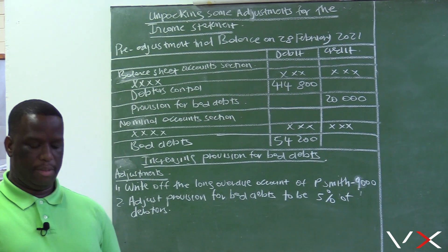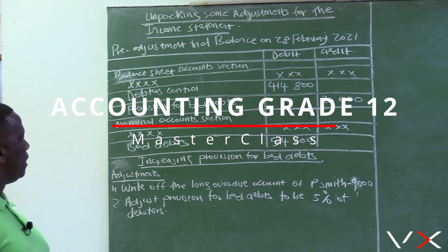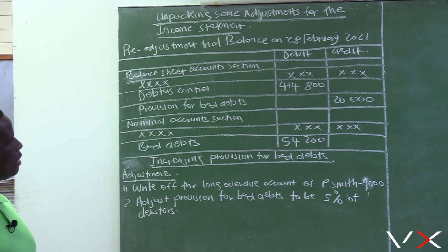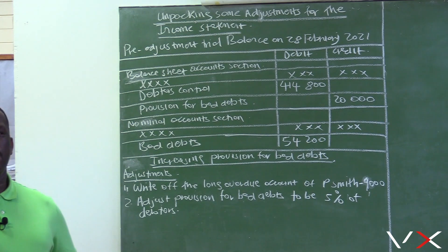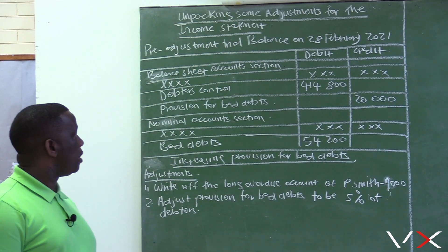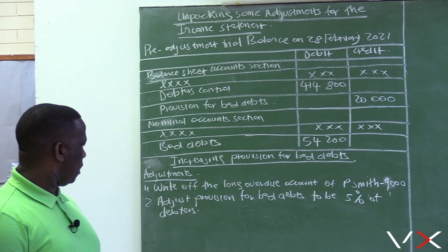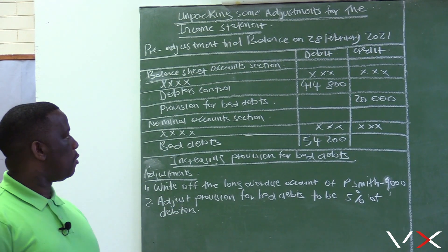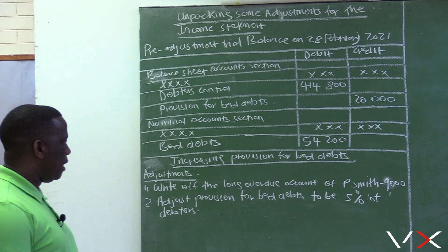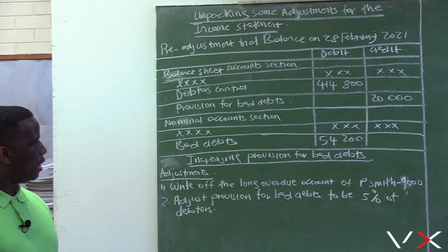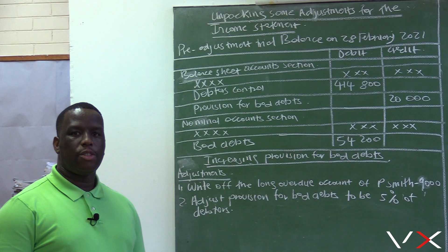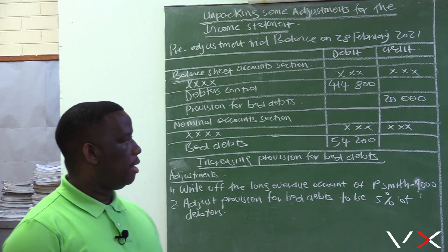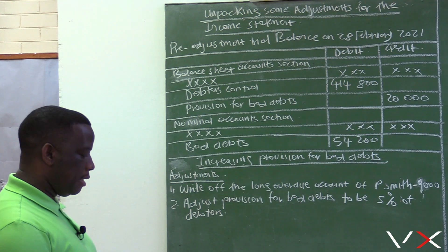Good day everyone, welcome to Accounting Masterclass. Today I have decided to draft an example on the board where we are unpacking some of the adjustments for the income statement. The adjustment I am focusing on today is provision for bad debts, and this provision for bad debts you can get from Grade 10, 11, and 12, so it's very important that learners are clear on how to solve an adjustment that has to do with provision for bad debts.